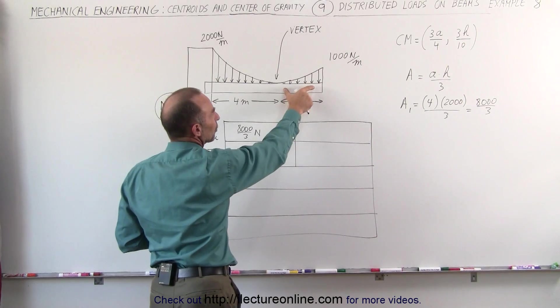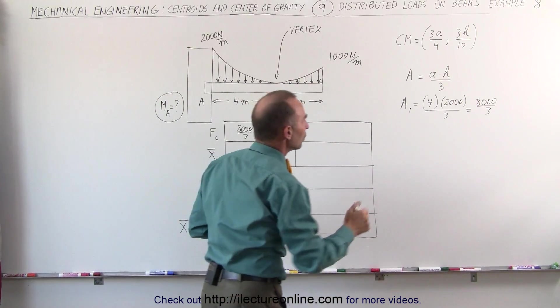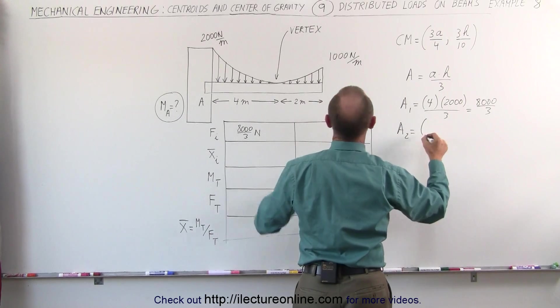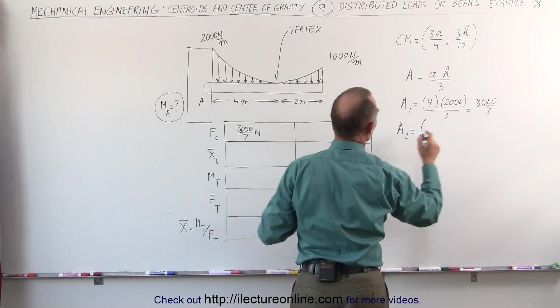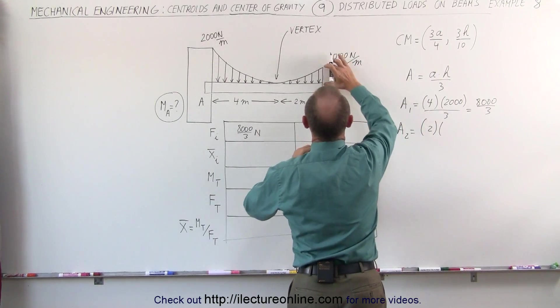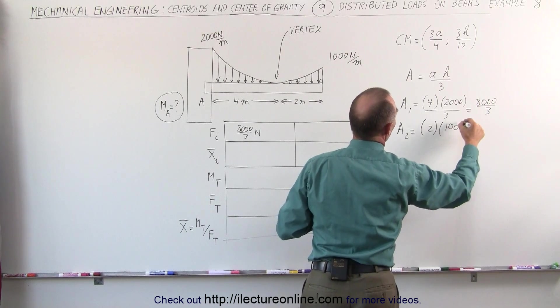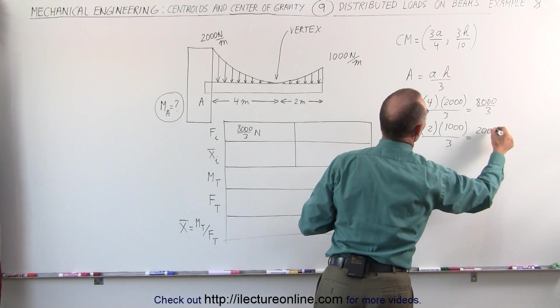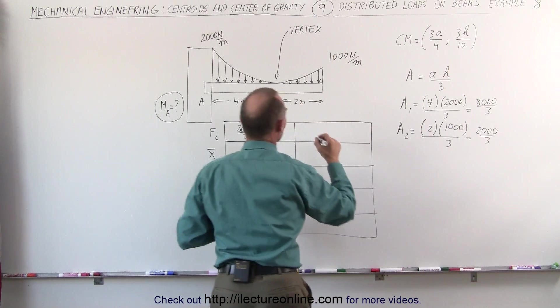To get the load contribution of this portion of the load, that's A2, that is equal to A, which in this case is only 2, H which is 1000, and divided by 3, that would be 2000 divided by 3, and that would be newtons.